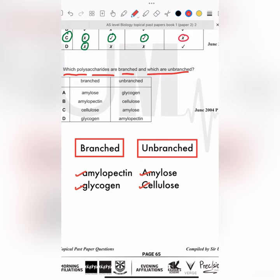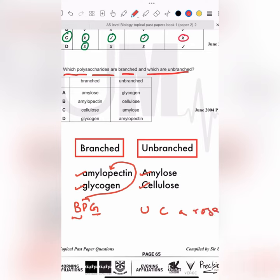You can memorize branched polysaccharides using BPG — 'Big Playground': B for branched, P for amylopectin, and G for glycogen. You can memorize unbranched polysaccharides using 'UC arose': U for unbranched, C for cellulose, and 'arose' matches with amylose.